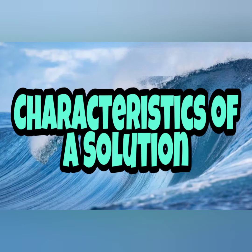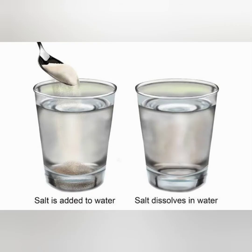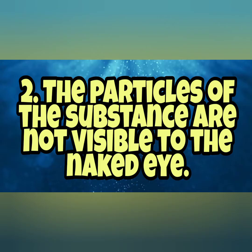What are the characteristics of a solution? First, a solution is uniform and homogeneous in nature. After dissolving sugar or salt, we can say the solution is uniform — there is no difference because all particles are the same. Second, the particles of the dissolved substance are not visible to the naked eye; we cannot see any particles inside after dissolving.